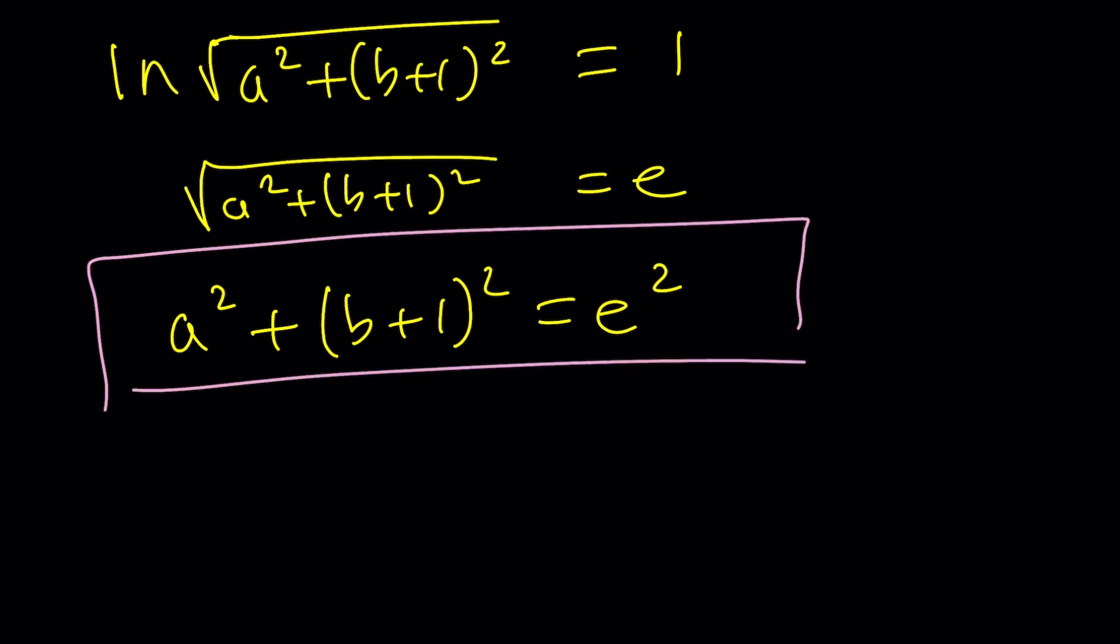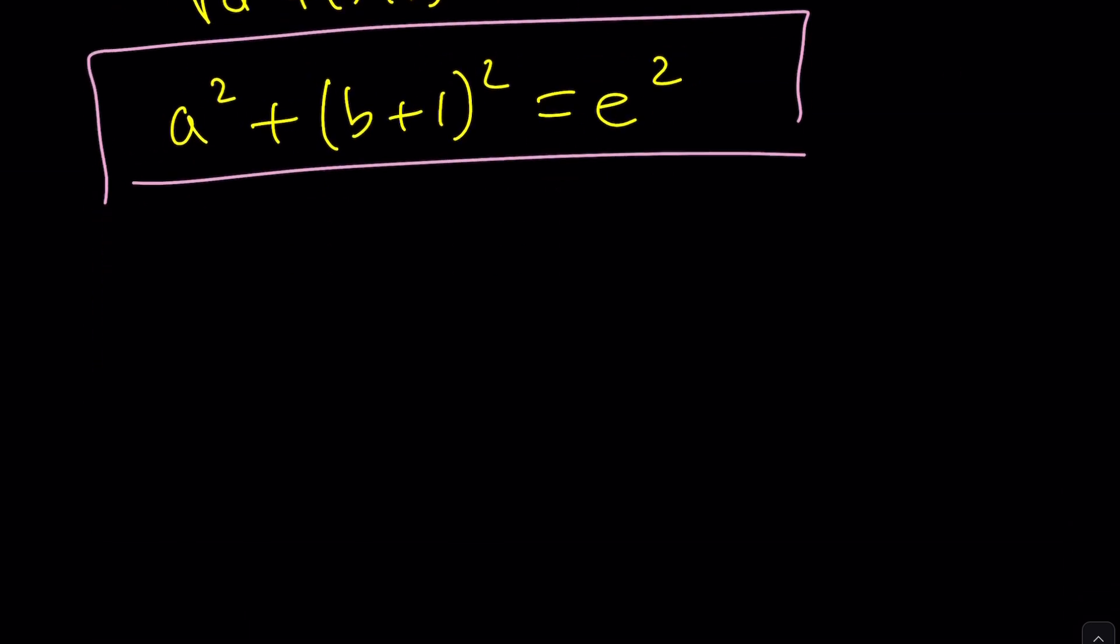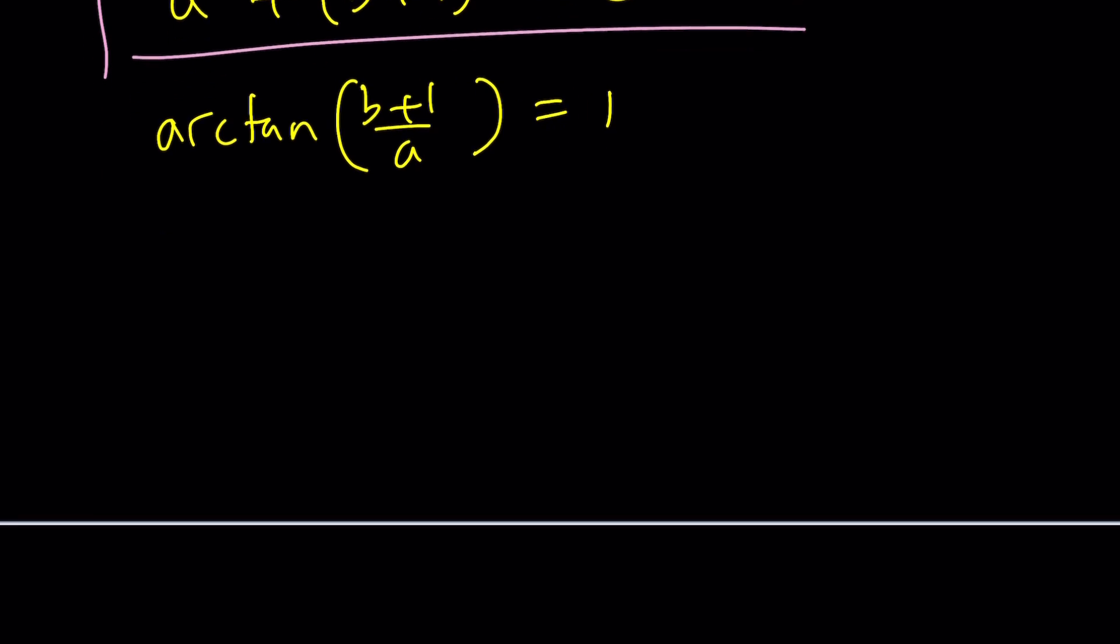The second one is going to come from the imaginary part. Arc tangent b plus 1 over a is equal to 1. What does that mean? 1 in radians, by the way. You've got to be careful. Everything should be in radians. So if you tan both sides, you're going to get tan of arctan, which is b plus 1 over a, is tangent 1. Again, 1 is not in degrees, it's in radians. Just be careful about that.